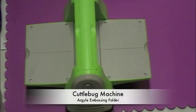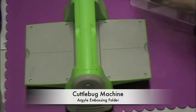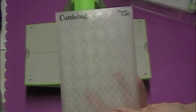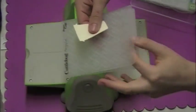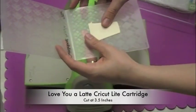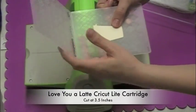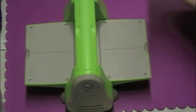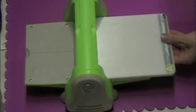So the first thing I have out is my Cuddlebug machine and I'm going to be using this Argyle embossing folder and I've got my cut which I made at 3.5 inches. I'm going to place this in there. You're only going to see the middle portion of this cut because of the layers that will go on top of it.